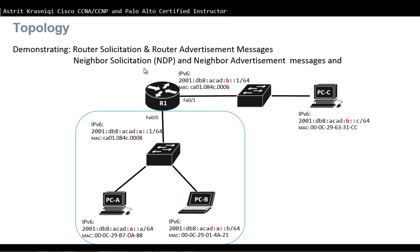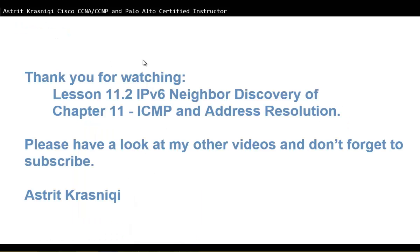We looked at and saw the Neighbor Solicitation, Neighbor Advertisement, and Router Advertisement messages. Thank you for watching lesson 11.2, IPv6 Neighbor Discovery, part of chapter 11 on ICMP and Address Resolution. Please have a look at my other videos and don't forget to subscribe. This has been Astrid Krasnichi — bye bye.